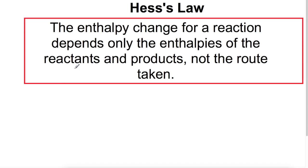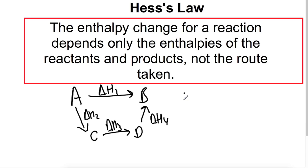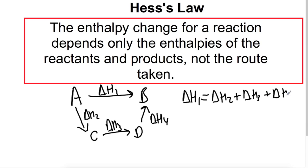For example, if we were going to have a look at a reaction which went from A to B, this would be enthalpy change number 1. And if we imagine we can't work out this enthalpy change, we could turn A into C with an enthalpy change of delta H2. We could then turn C into D with an enthalpy change of delta H3, and then finally change D into B. This means, using Hess's Law, that the enthalpy change going from A to B should be equal to each of the intermediate enthalpy changes — so delta H2 plus delta H3 plus delta H4.